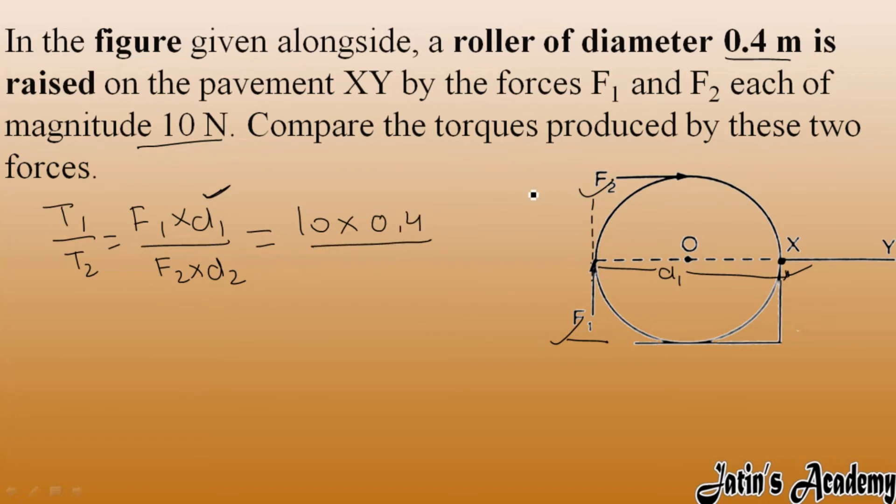Next, for F2 force, F2 magnitude is clear: 10 newton. But perpendicular distance - this is the line of action of force and this is the perpendicular distance from the fixed pivot point. If you carefully analyze, this perpendicular distance is the same as the radius, not diameter.